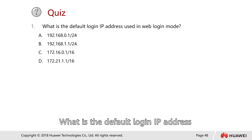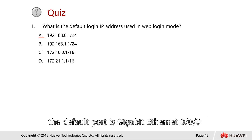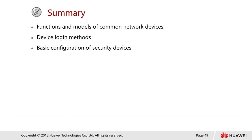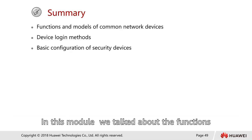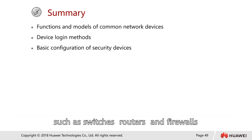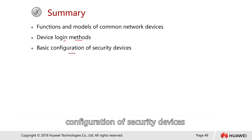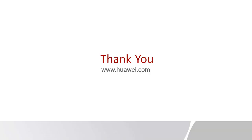At the end of the session, here's a quiz question: what is the default login IP address used in web login mode? The answer is 192.168.0.1/24, and the default interface is GigabitEthernet 0/0/0. In summary, this module covered the functions and models of common network devices including switches, routers, and firewalls; device login methods using PuTTY console and web browser; and some basic configuration of the security device.